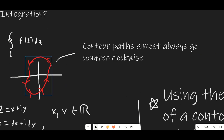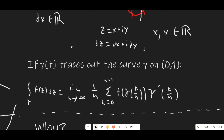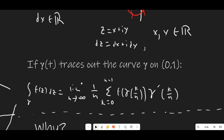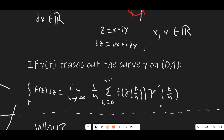Conventionally, contour paths are almost always going to go in a counterclockwise direction. So if the direction isn't specified, you can assume they're going to be oriented counterclockwise. We can also have non-closed contour paths — those are not going to have the little circle on the integral symbol, but they'll still have an indicator of the curve they're on. Here's a more formal definition of contour integration. If we have a curve — the classic Greek letter to use for that is lowercase gamma — then the contour integral over gamma does not necessarily have to be a closed curve.